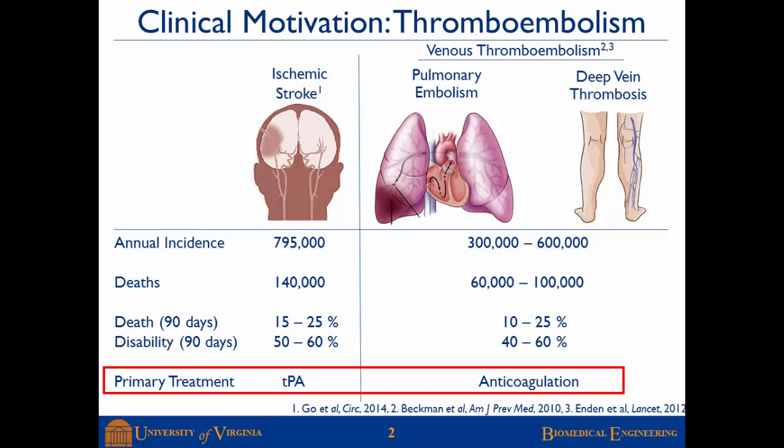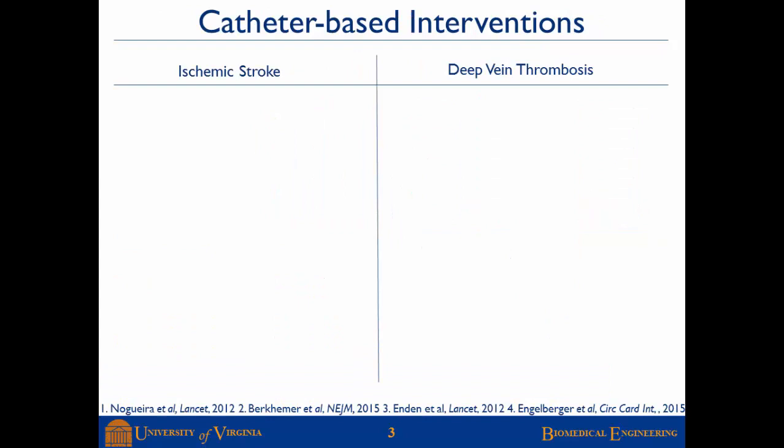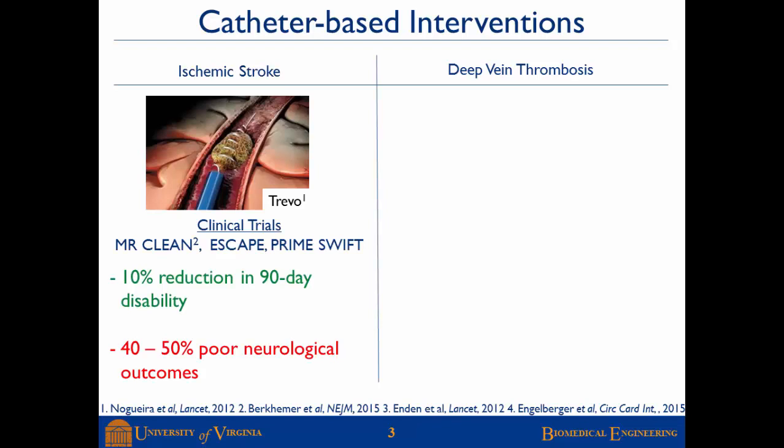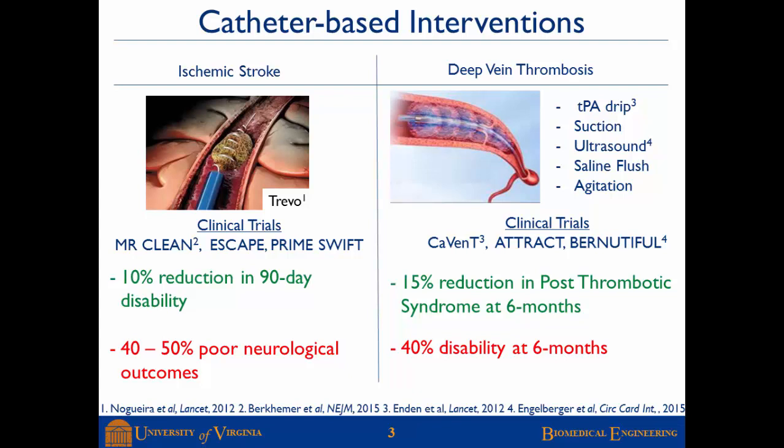For stroke, the primary treatment is intravenous tissue plasminogen activator administration, and then a course of anticoagulation therapy for venous thromboembolisms. To improve upon these current treatment paradigms, the field has turned towards catheter-based interventions for both stroke and deep vein thrombosis. Several clinical trials have been conducted, but there is still significant disability and death in these patient populations.